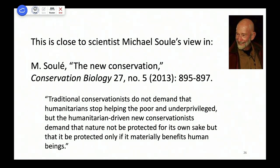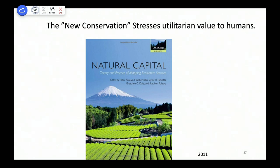Michael Soule, who recently died, was the leading actor in the traditional conservation movement. Traditional conservationists do not demand that humanitarians stop helping the poor, but humanitarian-driven new conservationists demand that nature be protected only if it materially benefits human beings. Soule argued instead that ecosystems have intrinsic value — an axiomatic right to exist. I think you can also believe they have aesthetic value for people and get to much the same place. The new conservation stresses only utilitarian values to humans and focuses on economic value.